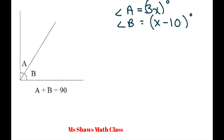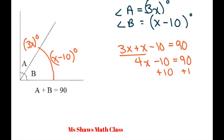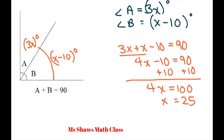The next one — you might want to try it on your own by pausing the video. Angle A is 3X and angle B is X minus 10 degrees. Add these up: 3X plus X minus 10 equals 90. That gives 4X minus 10 equals 90. Add 10 to both sides: 4X equals 100. Divide both sides by 4: X equals 25. Plugging in: 3 times 25 equals 75 degrees — that's angle A.